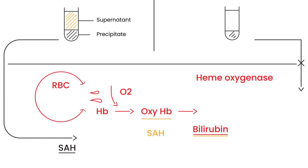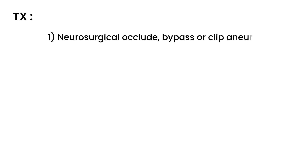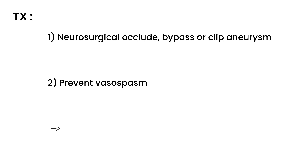The final part is about treatment. You evacuate the blood, and then you occlude, bypass, or clip the aneurysm. One very important additional step is that there is a chemical cascade that results in vasospasm in the cerebral blood vessels. To prevent this vasospasm, you give a medication called nimodipine, which is a calcium channel blocker that lowers pressure inside the blood vessels. That concludes this presentation about subarachnoid hemorrhage.